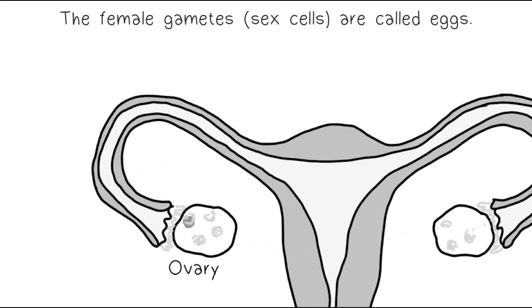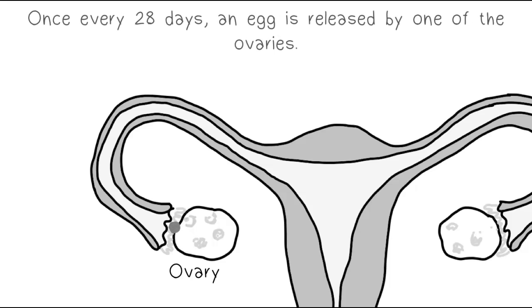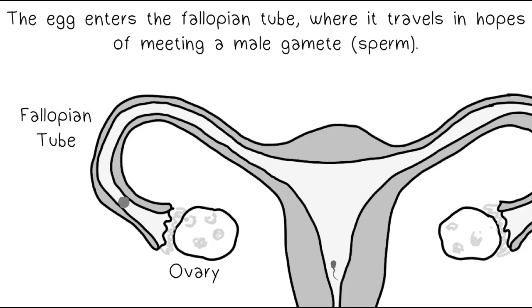The female gametes are called eggs. Once every 28 days, an egg is released by one of the ovaries. The egg enters the fallopian tube, where it travels in hopes of meeting a male gamete.